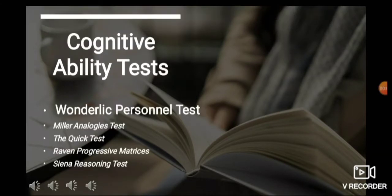Here we measure the cognitive skills of the applicant, like spatial reasoning, verbal reasoning, reading comprehension, problem solving, attention to detail, critical thinking, and numerical reasoning. Under cognitive ability test, we have five examples: Wonderlic Personnel Test, Miller Analogies Test, The Quick Test, Raven Progressive Matrices, and Siena Reasoning Test.